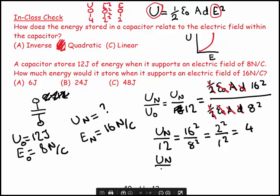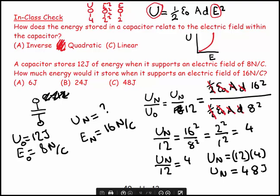So U_N over 12 is equal to 4, so U_N is equal to 12 times 4, U_N is equal to 48 joules.